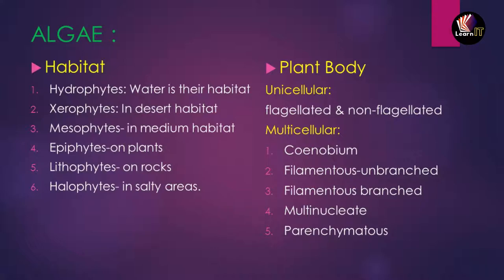Starting with habitat: if an alga is living in water, it is known as a hydrophyte. If it lives in a desert area with scarcity of water, it is known as a xerophyte. In mixed or medium conditions it is called a mesophyte. If it lives on a plant it is an epiphyte, on a rock it is a lithophyte, and in marshy or salty areas with high salt concentration in the soil, it is known as a halophyte.